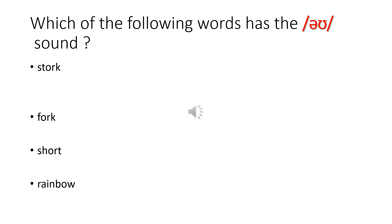Please write this question in your notebook and write the answer, then come back to check. Which of the following words has the OO sound? Stork, fork, short, rainbow. Perfect — it's rainbow.